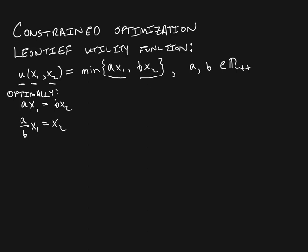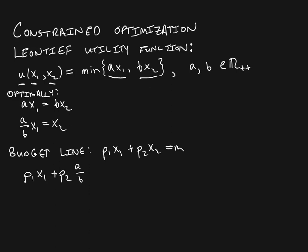Now we can plug this into our budget constraint. The budget line is P1X1 plus P2X2 equals M. Since both goods are desirable, we know we're going to fully exhaust our income. We substitute X2 equals A over B times X1, so we get P1X1 plus P2 times A over B times X1 equals M.